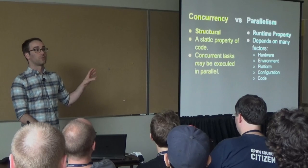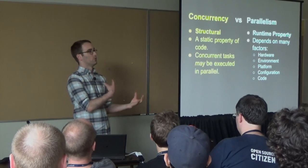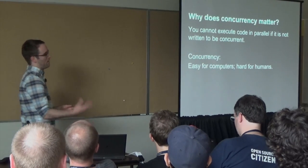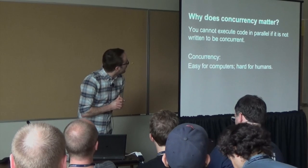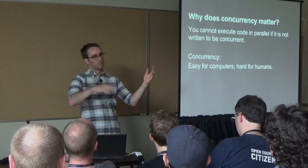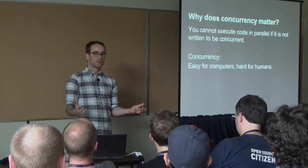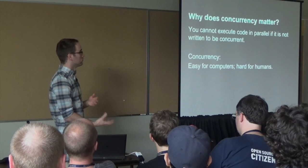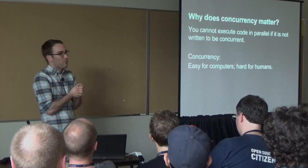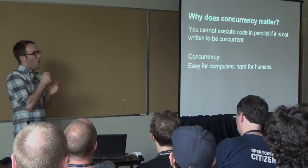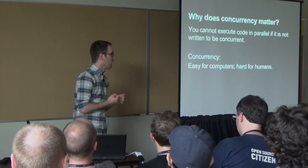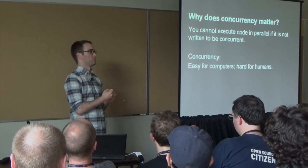This talk is mainly going to deal with concurrency, because it is the building block that allows parallelism to happen. Why does concurrency matter? We're getting more and more cores on everything from our computers to our phones, and we need to learn how to write code that runs in parallel. To do that, you need to know how to write concurrent code. And the fact of the matter is, that's hard for humans.